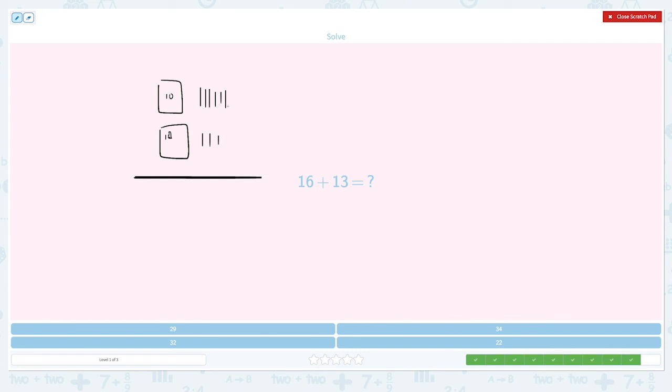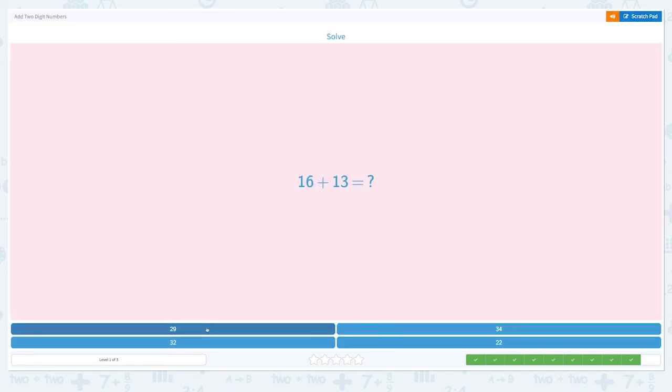1, 2, 3, 4, 5, 6, 7, 8, 9. 9 ones plus 2 tens. 20 plus 9 equals 29. Let's close the scratch pad. And are you ready? 29. That's right.